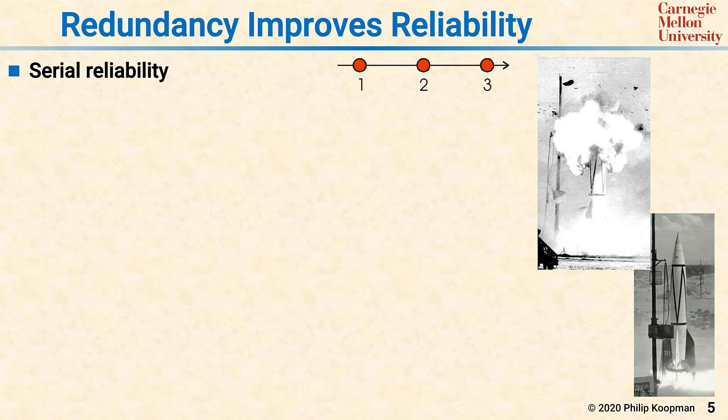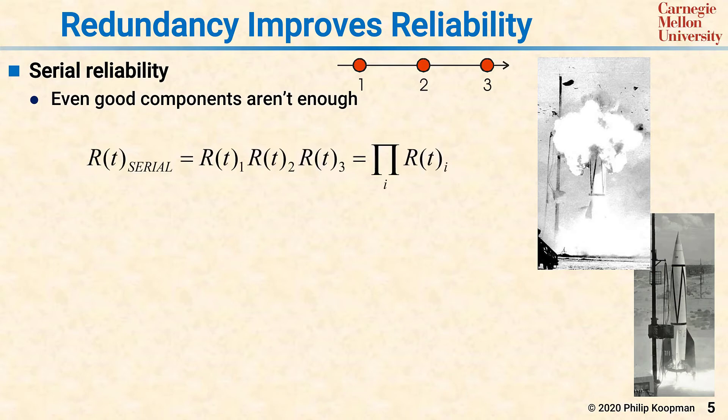The problem with this approach is that even if you get really good components, you can't get ultra-high reliability from a probability point of view. For your system to work, you have to get lucky, and all three of the components have to work. In mathematical form, this is a probability equation by saying that component one has to work, and component two has to work, and component three has to work.